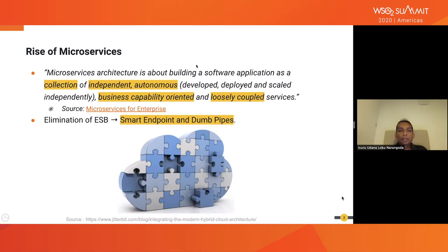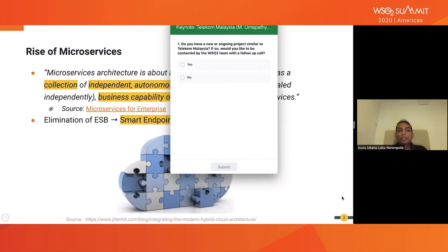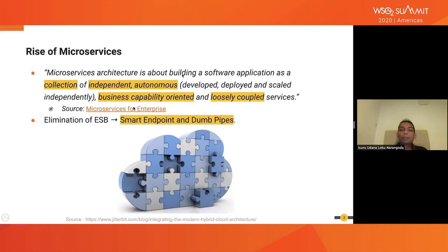The key motivation behind introducing microservices architecture is basically the breaking of the monolithic — the elimination of the existing centralized enterprise service bus architecture. So with the elimination of ESB, it was suggested to use smart endpoints and dumb pipes. Let's look at what these smart endpoints and dumb pipes are.